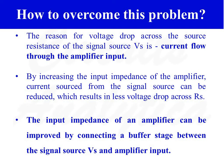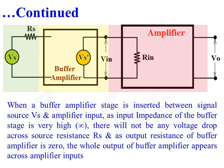The input impedance of an amplifier can be improved by connecting a buffer stage between the signal source VS and the amplifier input. In the diagram there are three parts: a green shaded part which is the signal source, a yellow shaded part which is the buffer amplifier, and a red shaded part which is the amplifier. When a buffer amplifier stage is inserted between signal source VS and the amplifier input, since the input impedance of the buffer stage is very high, there will not be any voltage drop across source resistance RS. And since the output resistance of the buffer amplifier is zero, the whole output of the buffer amplifier appears across the amplifier inputs.